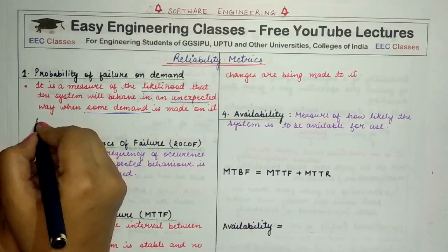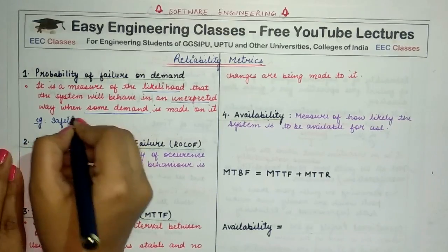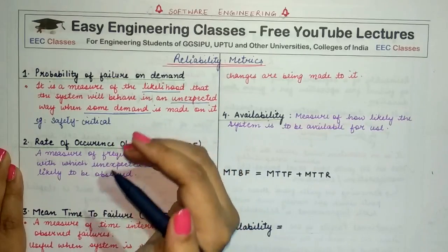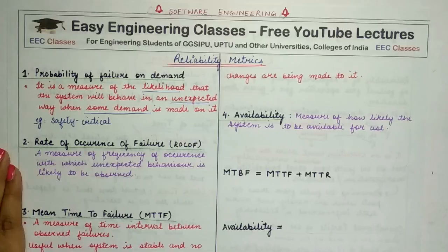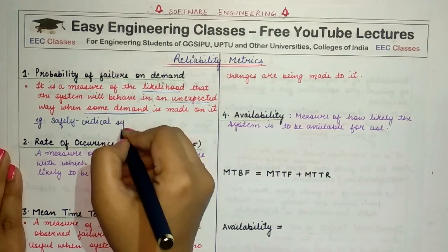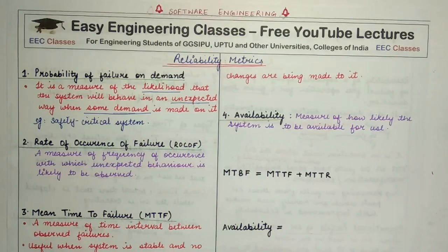This reliability metric is very important in the case of safety-critical software. In safety-critical software, we generally consider every operation very critical. Every time a user requires the system to execute a function, it is considered crucial. So in a safety-critical system, it is very important to know the probability that when some demand comes, our system will fail or will not do the right work.